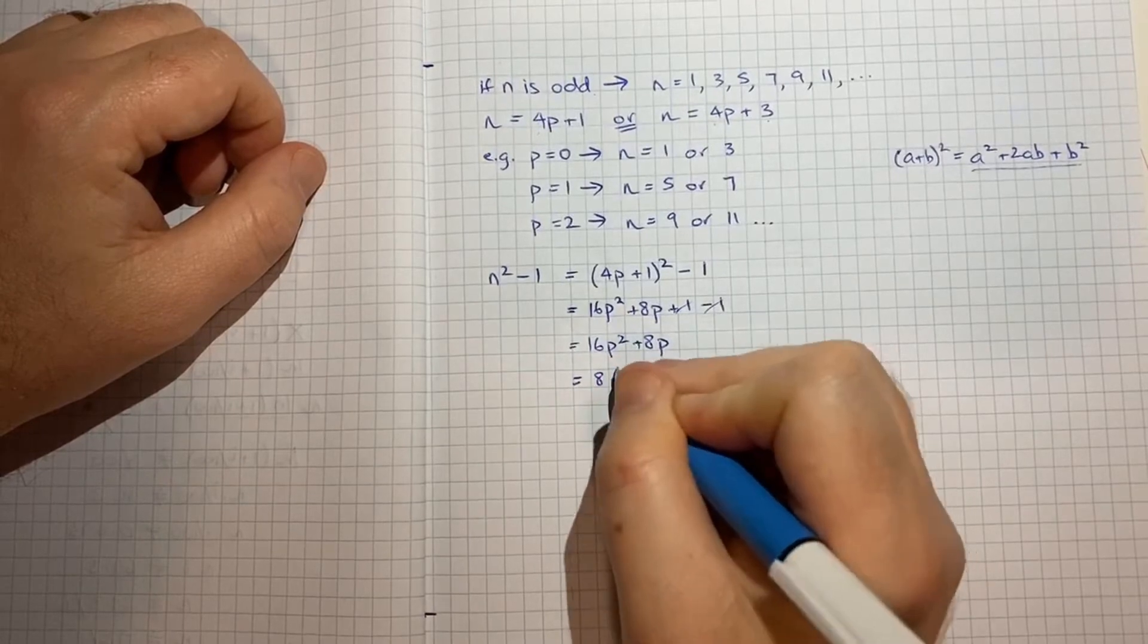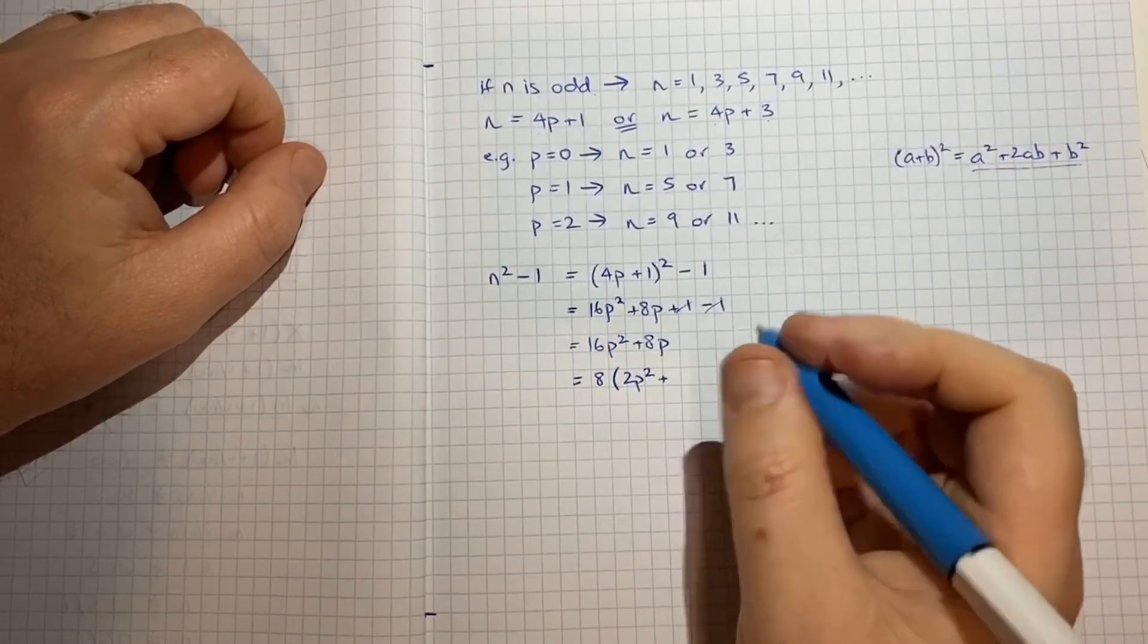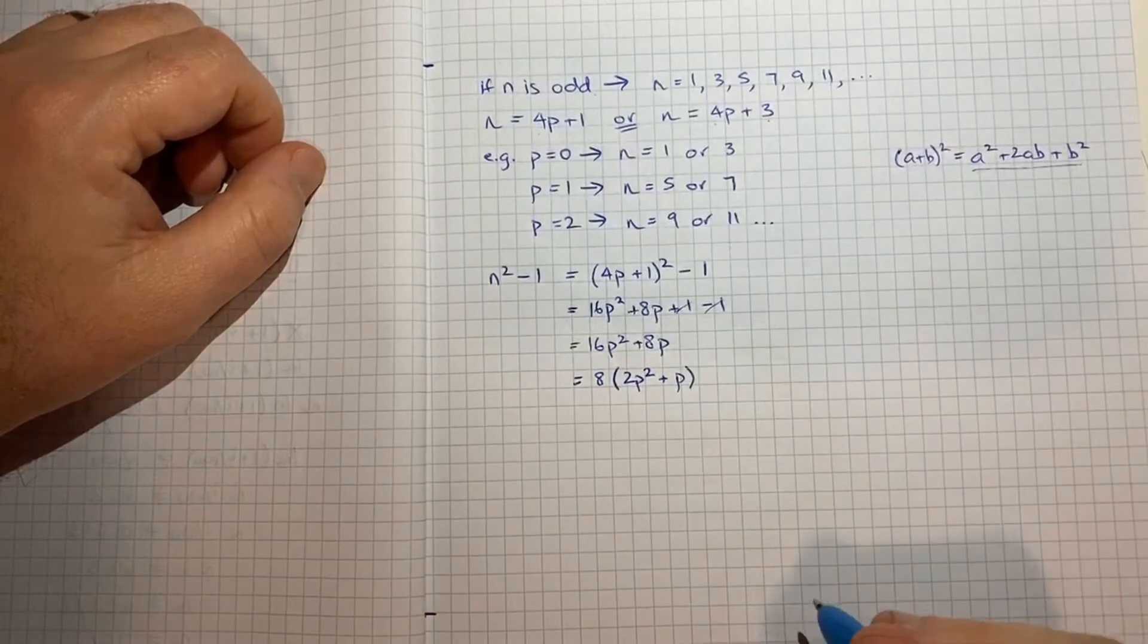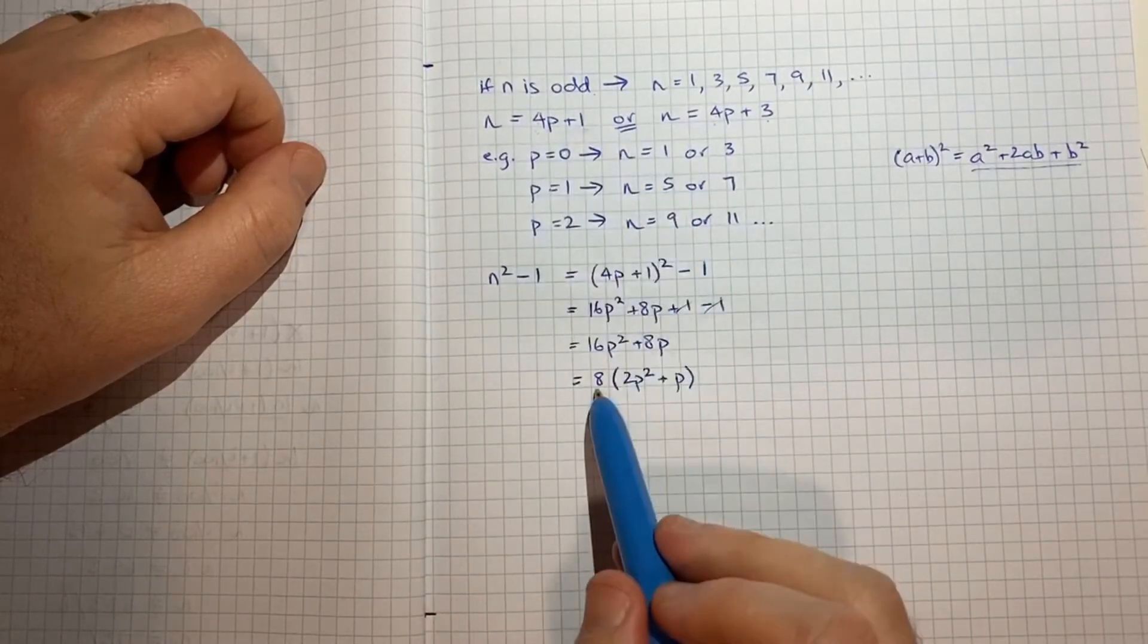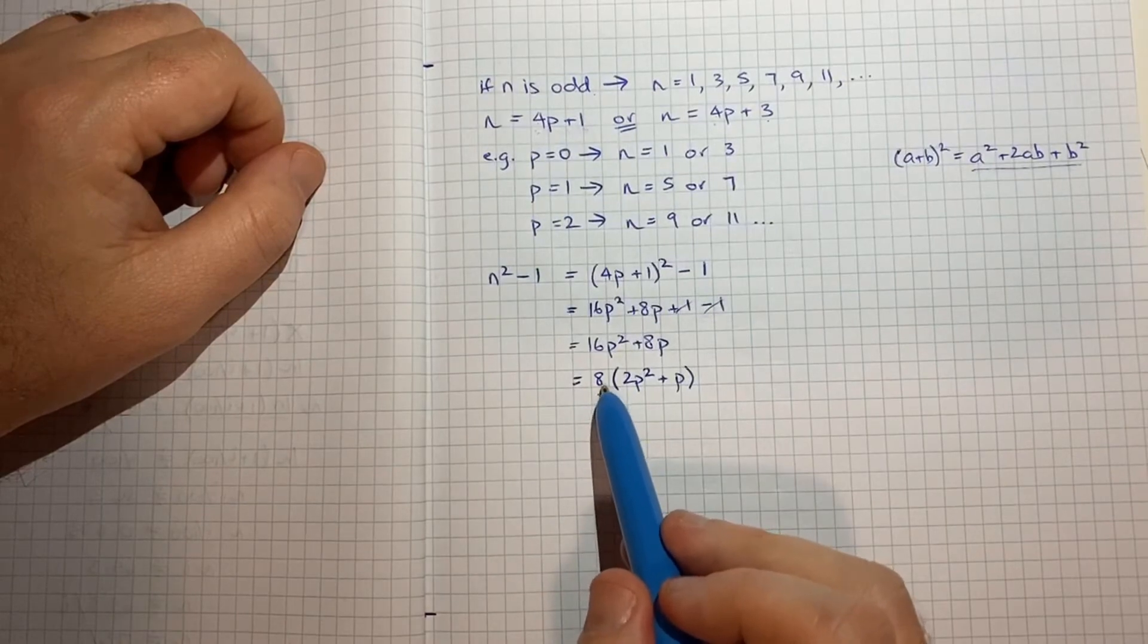So we get equal to 16p squared plus 8p and we can just bring out the 8 to help make our point, 8 times 2p squared plus p. And there we see that when we're using the first possible way of defining n we get something that is divisible by 8.